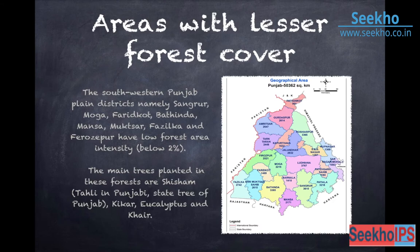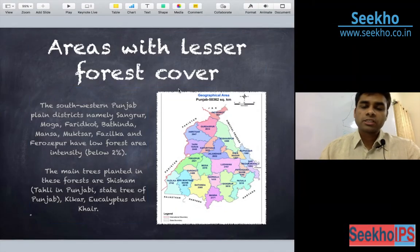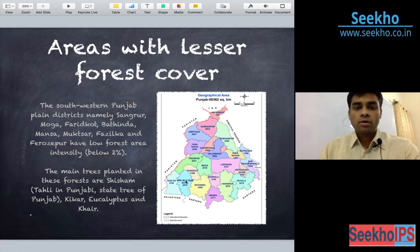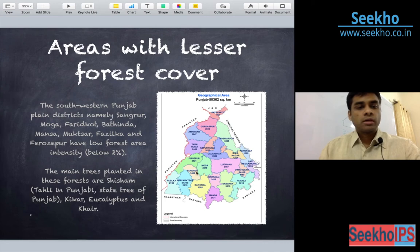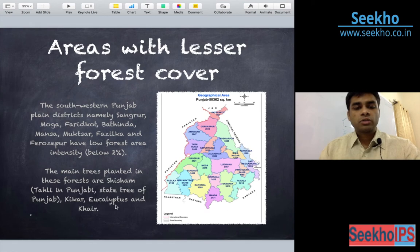Next, we are trying to find the areas where the forest cover is less. You will find all the areas in the southern belt, namely Sangroor, Moga, Muktsar, Ferozepur, Bathinda, Mansa and Farsrurg. The intensity is even lesser than 2%. The main trees planted here are Shisham, the State Tree, Kikkar, Eucalyptus and Khair.